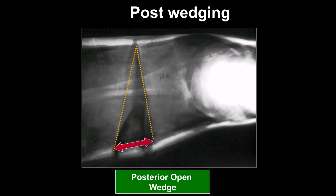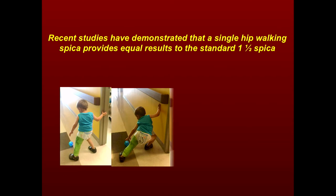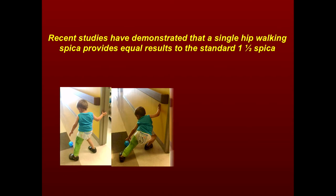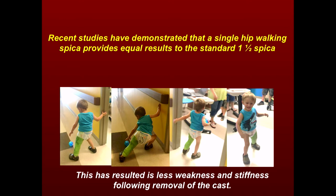We'll talk about the process of wedging later when we discuss principles of cast application. We used to put them in bilateral spicas. But now enough people have gone to using a single hip spica with the patient in that position of abduction and external rotation. The beauty of this is they can get up and walk around, so they have less weakness. When they were in the bilateral spica and came out, they would limp a lot. With the single hip spica, unless it's massively shortened, it works well, and a number of studies have shown it's useful.